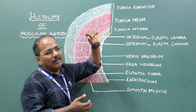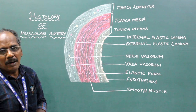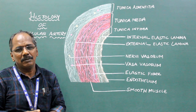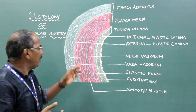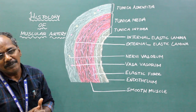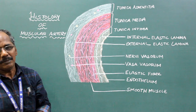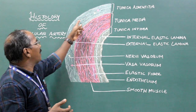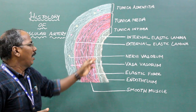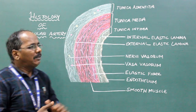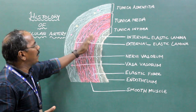Tunica Adventitia is the outermost layer, which is made up of loose connective tissue and contains Vasa Vasorum and sympathetic fibers, i.e., Nervi Vasorum. It also contains more elastic fibers and less collagen fibers, and an external elastic lamina which demarcates the Tunica Adventitia and Tunica Media.